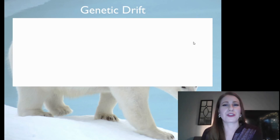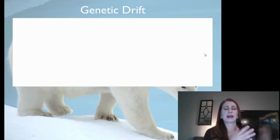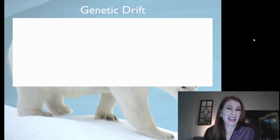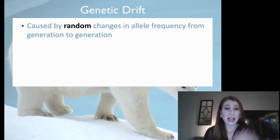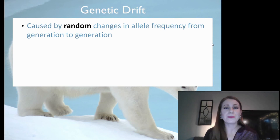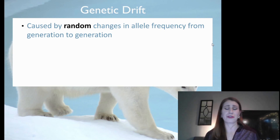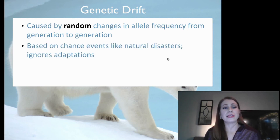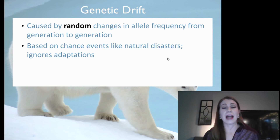The first thing is genetic drift. It makes you think of something lazily floating around, and that's kind of what it is. Genetic drift is caused by random changes in allele frequency from generation to generation. It is random — based on chance events like natural disasters, and it ignores all adaptations.